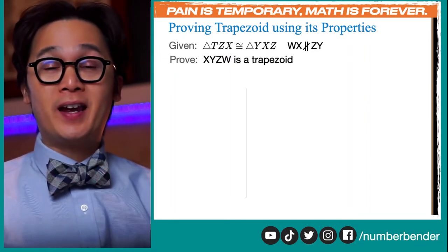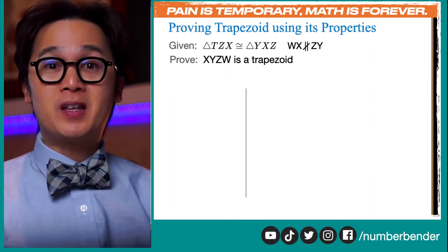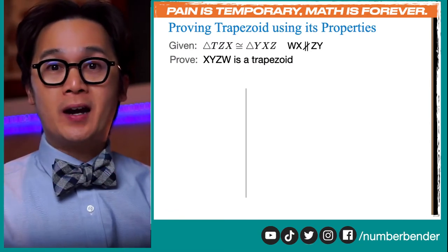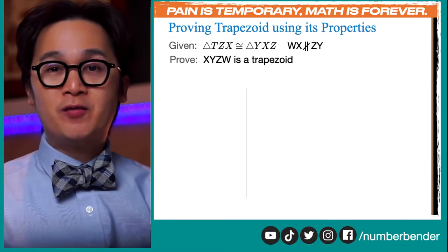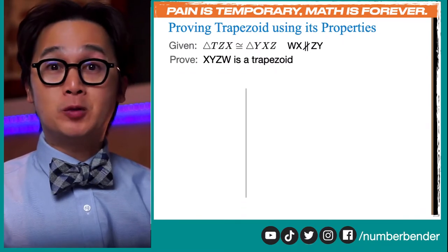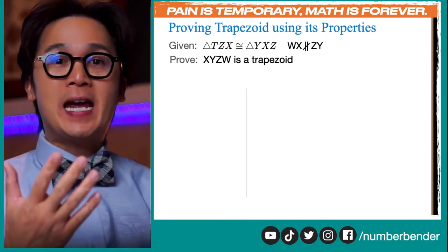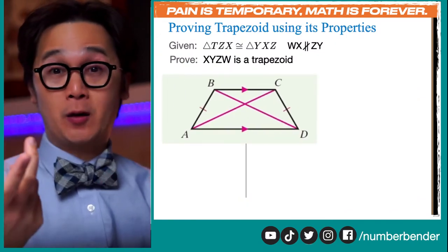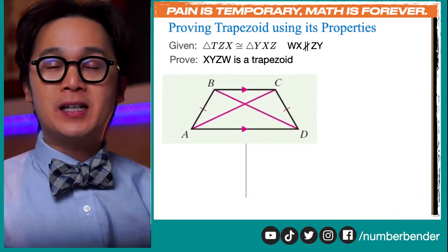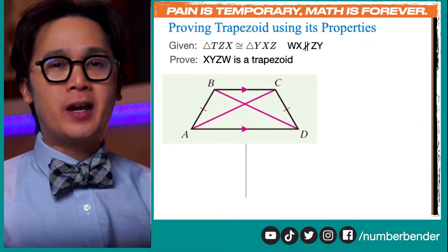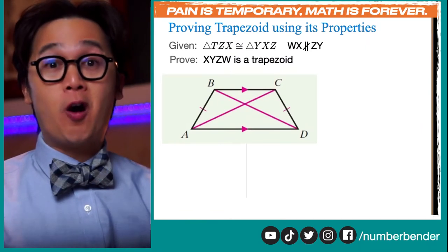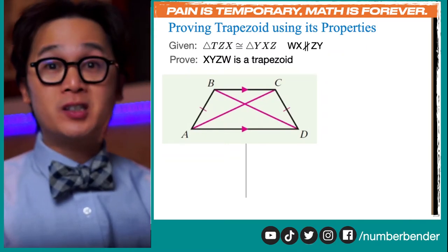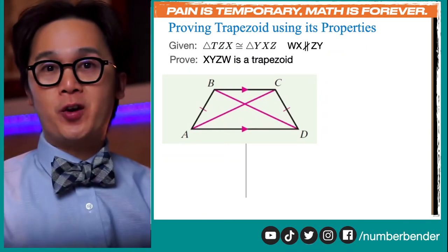For this particular lesson, we're going to be proving a trapezoid. This is going to be the first shape we're working on today. Before we work on the given information and what we need to prove about this trapezoid, one technique you can use is to have the end in mind — try to visualize and remember all the theorems and properties you can use pertaining to the shapes in a trapezoid.